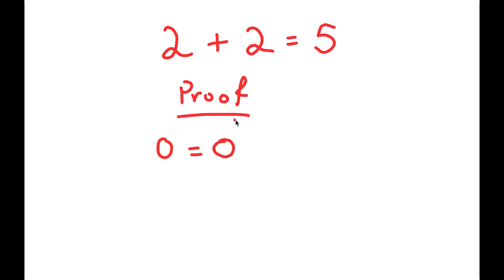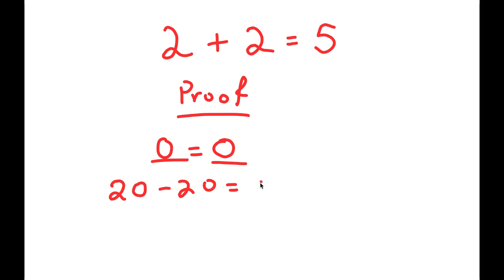From here, what I'm going to do is rewrite 0 on my left-hand side as 20 minus 20, and rewrite the 0 on my right-hand side as 25 minus 25. So now I get 20 minus 20 is equal to 25 minus 25, which is again a true statement because 20 minus 20 is 0 and 25 minus 25 is also 0.